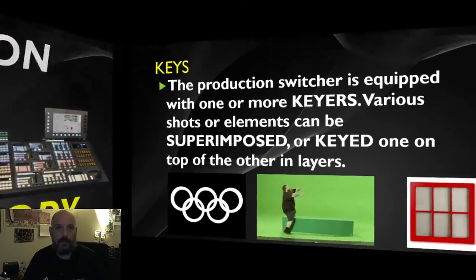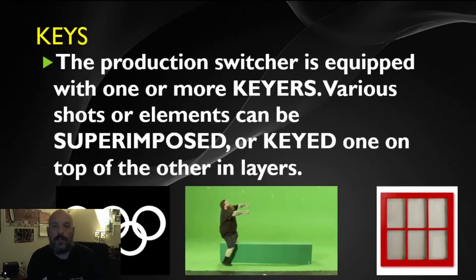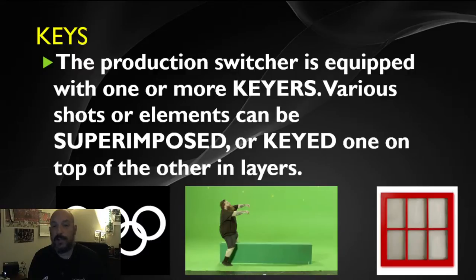Welcome back to JRN3365. This is the third lecture and we're going to talk a little more about the production switcher — what it's able to pull off and some of the technology. One of the things the switcher has are what are called keyers. Keyers are a type of special effect that allows for the overlay of different types of video, graphics, animations, and things that will help your story. There are many different types of overlays that can be superimposed or keyed on top of other layers.